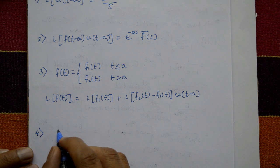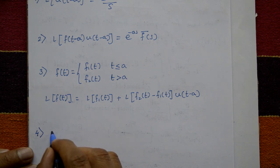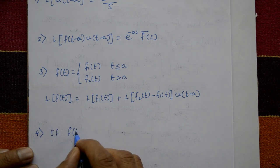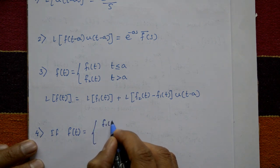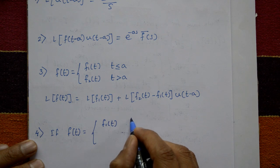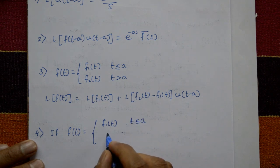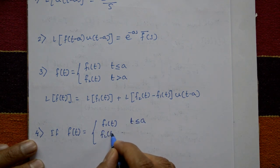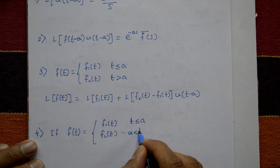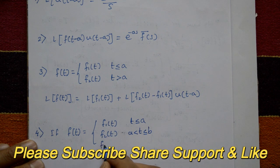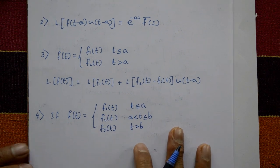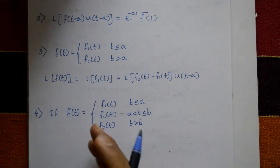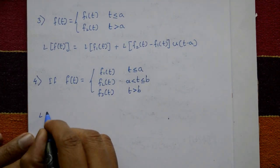Fourth property: if f(t) is defined as three functions — f1(t) when t is less than or equal to a, f2(t) when a is less than t less than or equal to b, and f3(t) when t is greater than b.